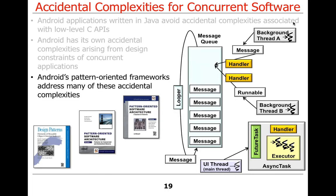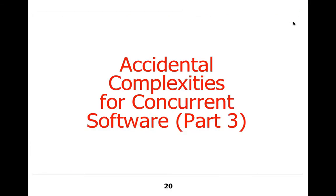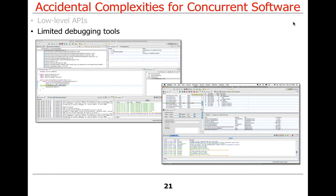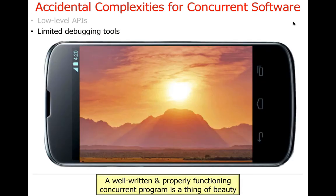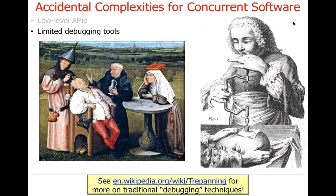Pattern-oriented frameworks are going to make this problem go away. There are other problems also due to accidental complexities stemming from the fact that we often use tools for debugging that are relatively primitive. If your concurrent program is correctly written and functioning properly, it's a thing of beauty. But when things go wrong, how do you figure out what's gone wrong?